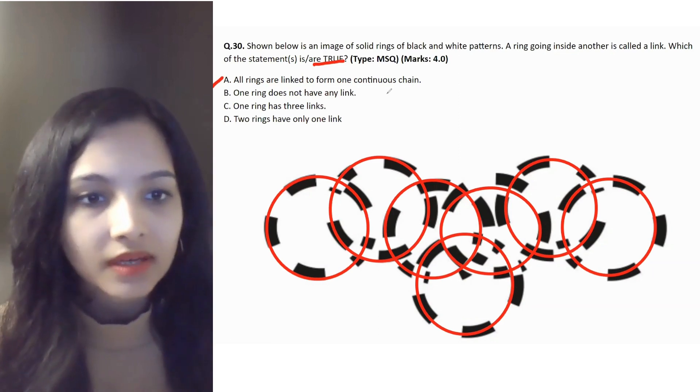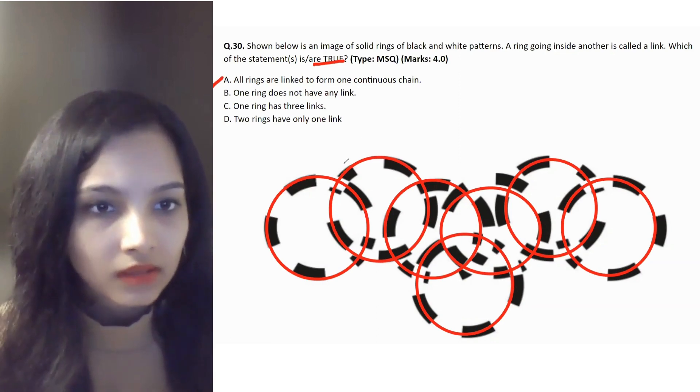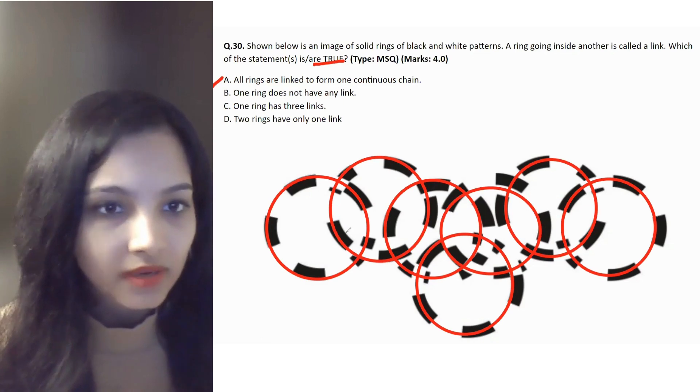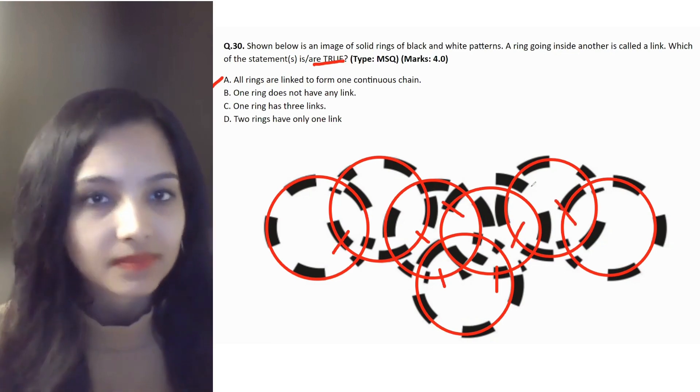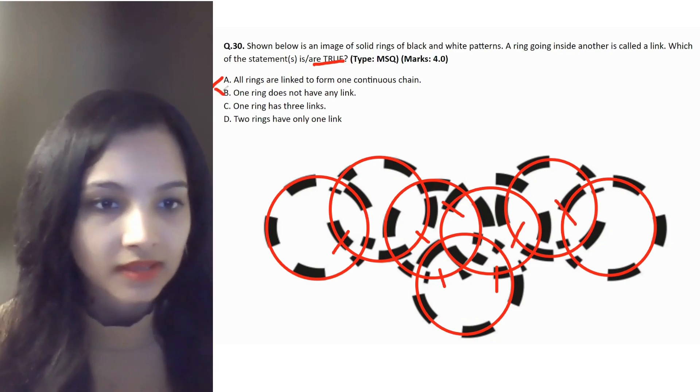Statement B: one ring does not have any link. Is there any such ring which does not have any link? No, this one has. Again, this one has. The third one also. Even this. Yes, yes, and yes. All of them have, so B is not the answer.